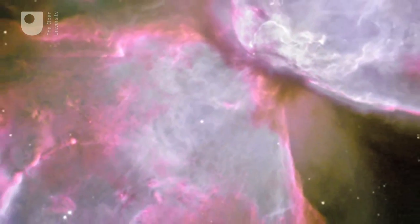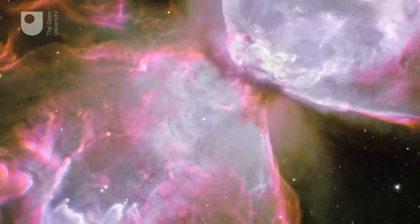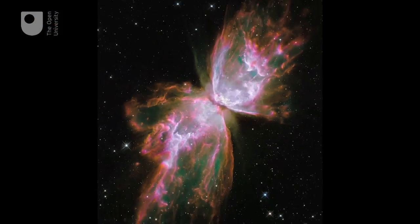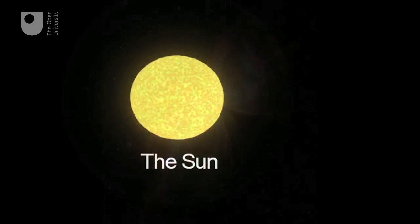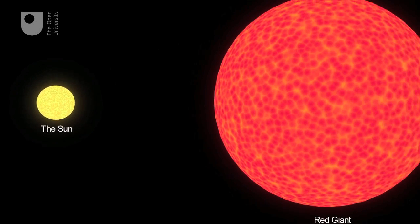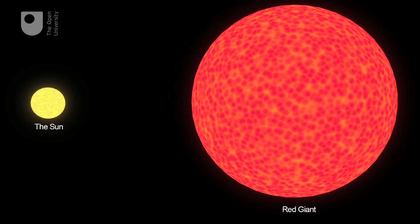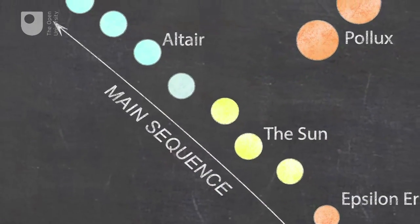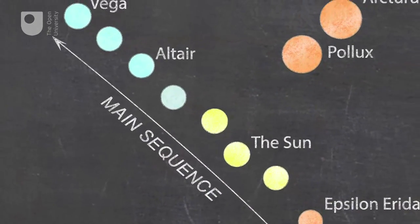Red giants are cooler than the Sun, so they have a red-orange tinge to the visible light they emit. Living up to their names, the largest red giants may be over a hundred times the size of the Sun. Red giants are stars near the end of their life, and they come above the main sequence on the Hertzsprung-Russell diagram.